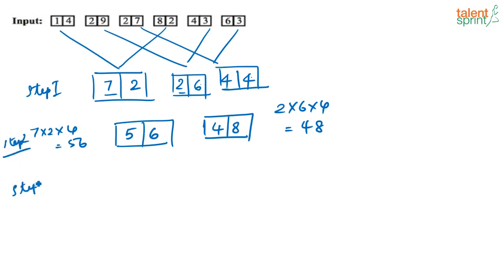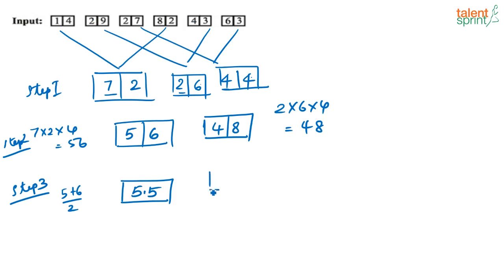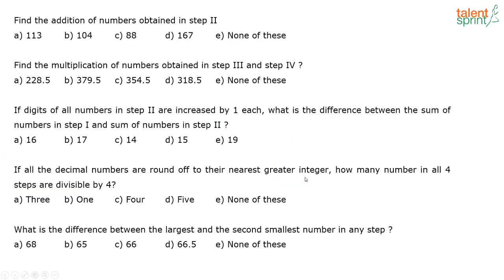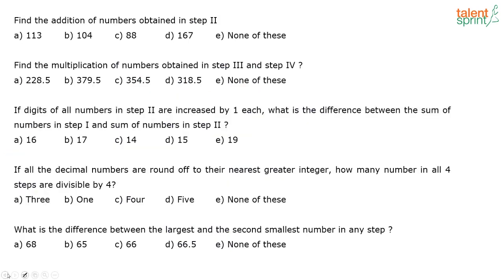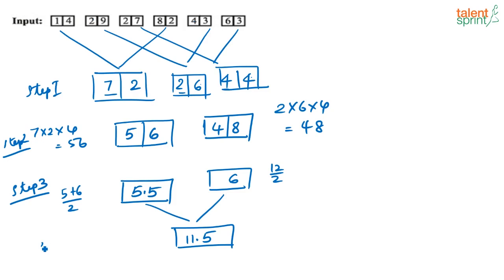For Step 3, we find the average of the two Step 2 numbers. The average of 5 and 6 is (5+6)/2 = 5.5. Similarly, (4+8)/2 = 6. The last step — Step 4 — is the sum: 6 + 5.5 = 11.5.